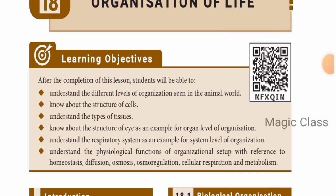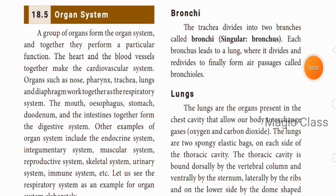In the last video, we talked about the organ level of organization. Now, coming on to the organ system: a group of organs forms the organ system, which performs a particular function. For example, the heart and blood vessels together make the cardiovascular system.